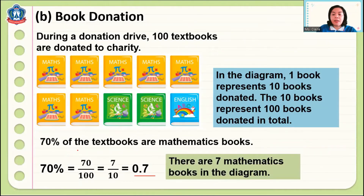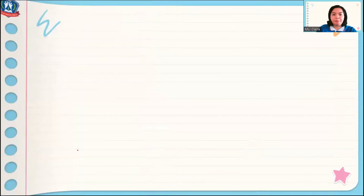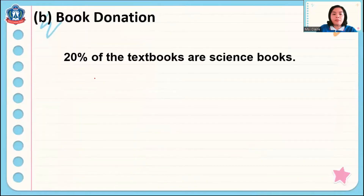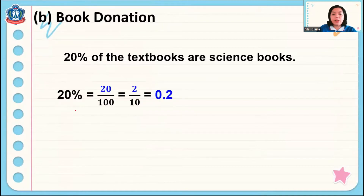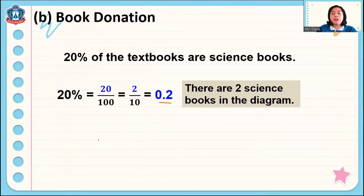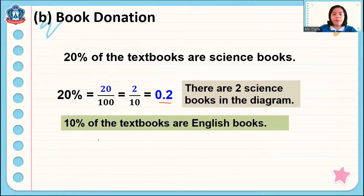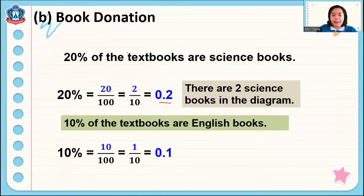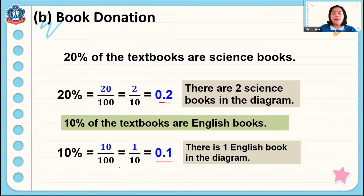So there are seven mathematics books in the diagram. 20 percent of the textbooks are science books. 20 percent is equal to 20 out of 100, or two tenths, and as a decimal we have 0.2 — so there are two science books in the diagram. 10 percent of the textbooks are English books. 10 percent in fraction is equal to 10 out of 100, or one tenth, or 0.1 in decimal — so there is one English book in the diagram. That's how to convert percentage to fraction and then to decimal.